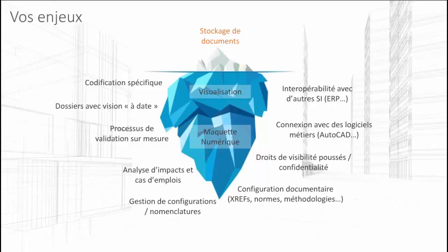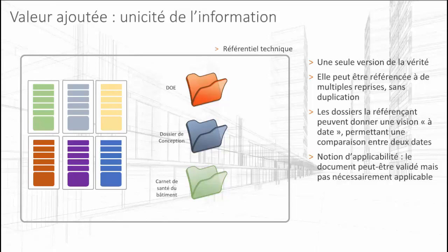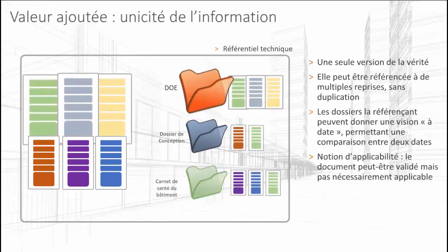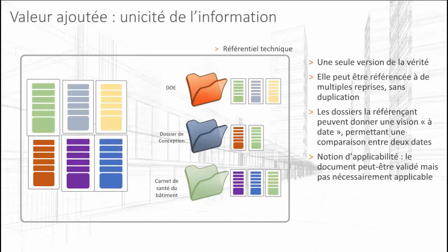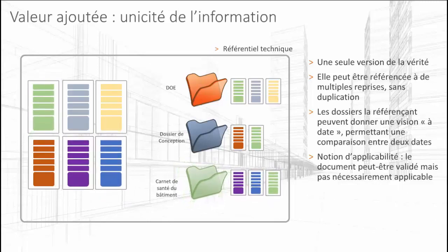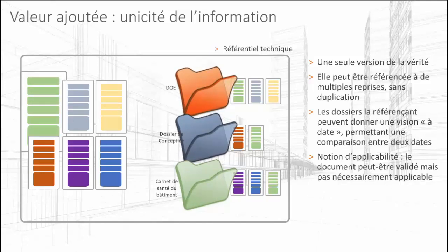Je vais revenir sur quatre points caractéristiques du PLM. L'enjeu très important est la notion d'unicité de l'information : l'objectif est d'avoir l'information une seule fois dans le référentiel, pour qu'elle soit référencée à de nombreuses reprises dans d'autres dossiers. Prenons l'exemple d'une pièce d'identité que vous avez sur votre disque dur dans un dossier pièce d'identité — vous pourriez en avoir besoin dans un dossier de crédit, d'assurance ou de logement. Dans ce cas-là, vous avez potentiellement quatre fois votre document sur votre disque dur, et vous ne savez pas forcément quelle est la bonne version. L'objectif du PLM est de vous garantir l'unicité et la continuité de l'information tout au long de son cycle de vie.